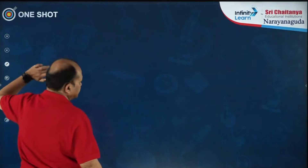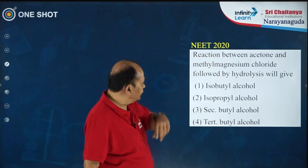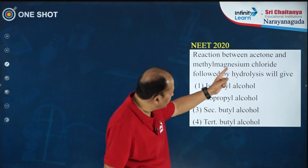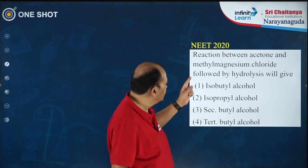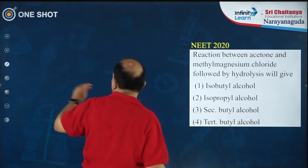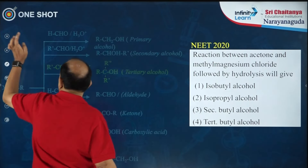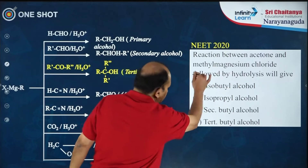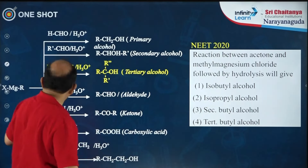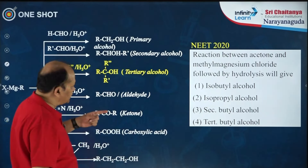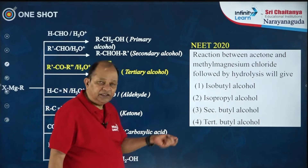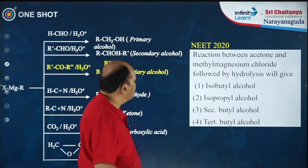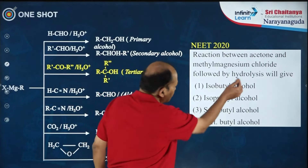One more question — this was asked in NEET 2020: reaction between acetone and methylmagnesium chloride followed by hydrolysis. This is a similar question to what we have seen just now. In the previous one they gave ethylmagnesium bromide; now they give methylmagnesium chloride.